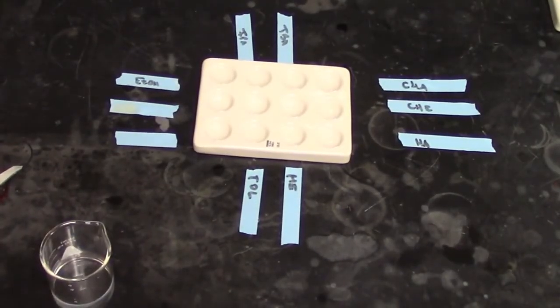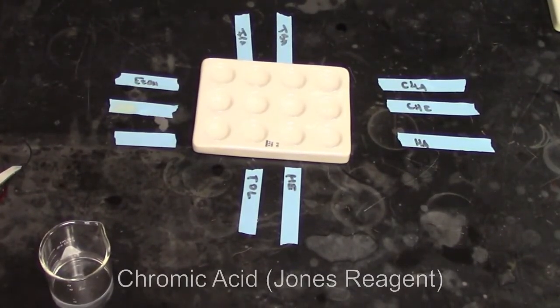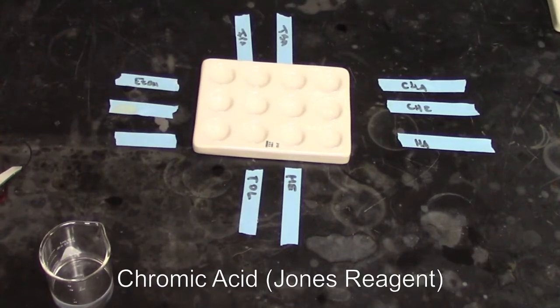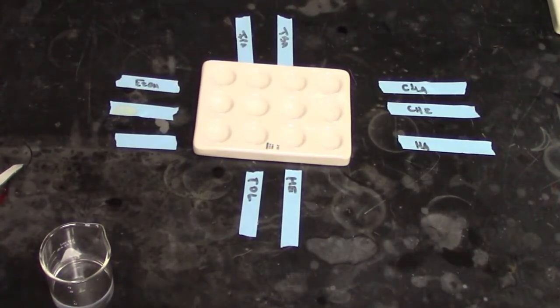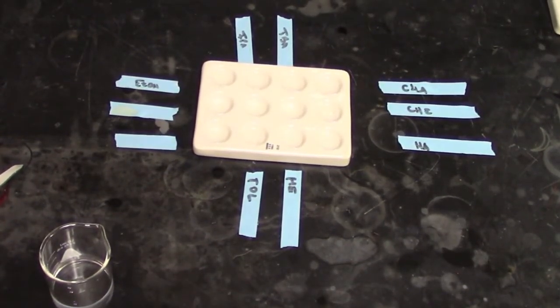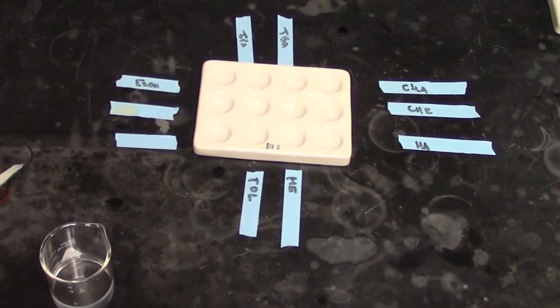All right, our next test here is going to be the Jones Reagent test. Now this is chromic acid and our chromic acid here is going to start as a nice deep orange color. Any reaction with Jones Reagent should shift us to a green color.